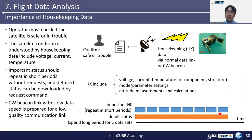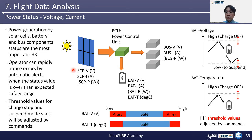CW beacon link with slow data speed is prepared for a low quality communication link in some satellites. This is used for troubleshooting, especially for errors caused by power. The merit of the CW beacon is being a low power transmitter with minimum computer functions. Power generation by solar cells and charge/discharge battery and consumption by bus components — their status are the most important HK. Operators can rapidly notice any issues by an automatic alert when the status value is over the designated safety range. Threshold values for charge stop and the start of suspend mode should be adjustable by commands.